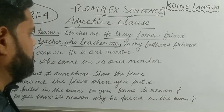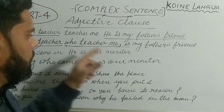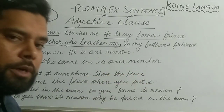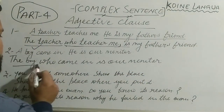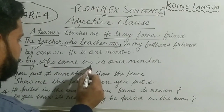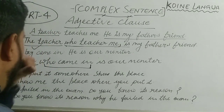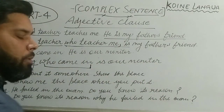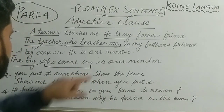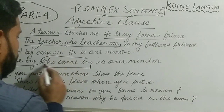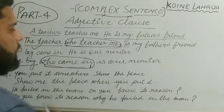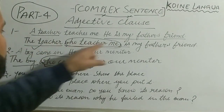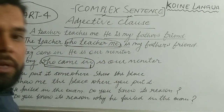Another example: 'A boy came in. He is our monitor.' The boy who came in — this is the adjective clause. 'Who came in' defines the noun 'boy,' so 'who came in' is the adjective clause. The combined sentence is: 'The boy who came in is our monitor.' So 'who teaches me' and 'who came in' are both adjective clauses that define the noun or pronoun.